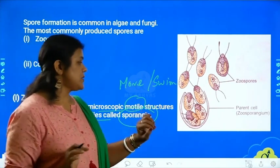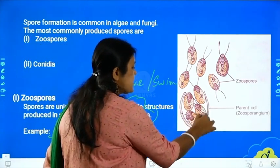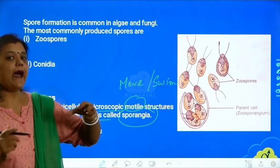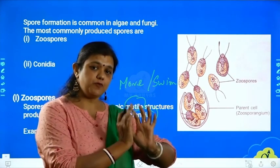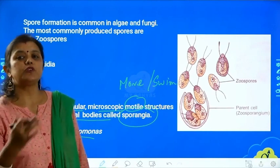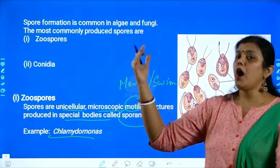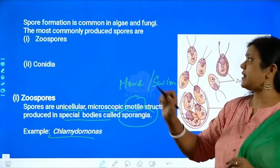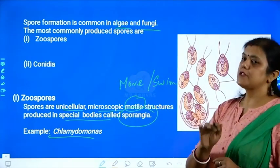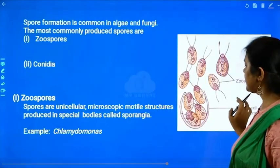An example is Chlamydomonas. As you can see, there is a sporangia — the particular pouch or place where spores are formed. The spores form inside and during unfavorable conditions are stored there. When favorable conditions arrive, they burst open and scatter everywhere, with each zoo spore forming a new organism. So sporulation is the formation of spores, seen in algae and fungi, with two types: zoo spores and conidia.